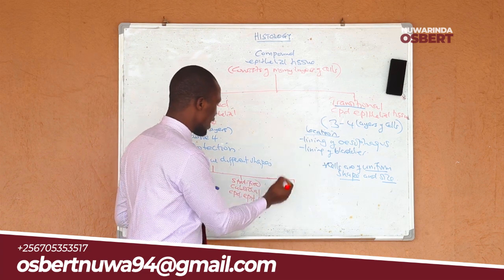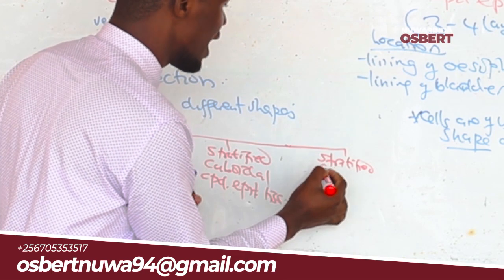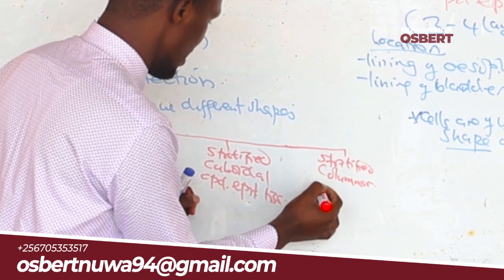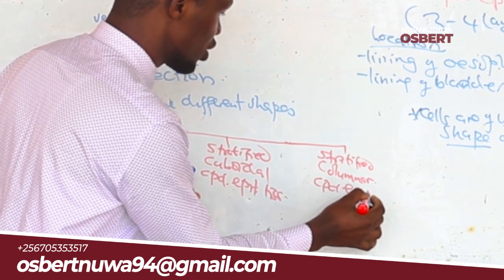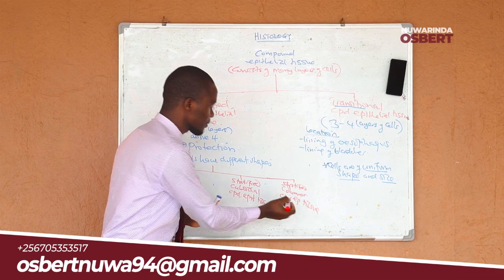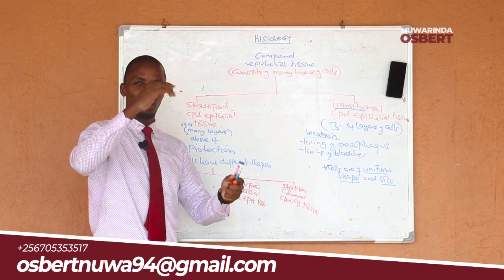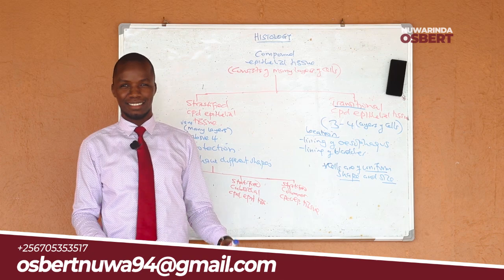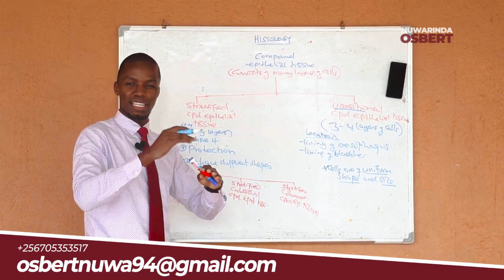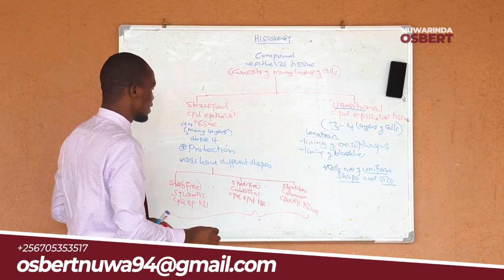You can also have stratified columnar compound epithelial tissue, where the cells in the outermost layer are more column-like. So depending on the shape of the cells in the outermost layer, that is what gives us these different subcategories of stratified compound epithelial tissue.